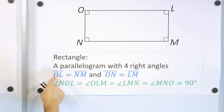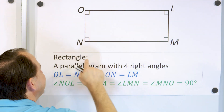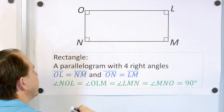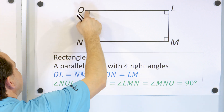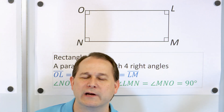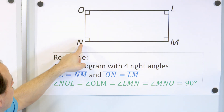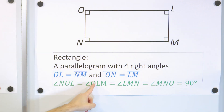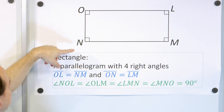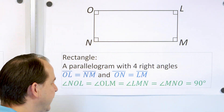If you read through the math, all it's telling you is OL is equal to NM — this side is equal to this one — and this side is equal to this one. This angle is equal to this one, and this angle is equal to this one. It looks like a bunch of math gobbledygook, but if you read through it, that's all it's saying. Angle NOL is equal to OLM. So all the opposite angles are the same — in fact, all the angles are the same for a rectangle.